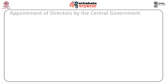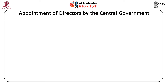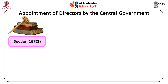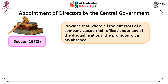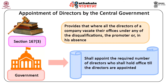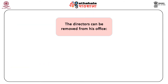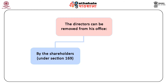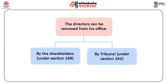Appointment of directors by the central government: Section 167, Subsection 3 provides that where all the directors of a company vacate their offices under any of the disqualifications, the promoter, or in his absence the central government, shall appoint the required number of directors who shall hold office till the directors are appointed by the company in the general meeting. The directors can be removed from office by the shareholders under Section 169 and by the tribunal under Section 242.